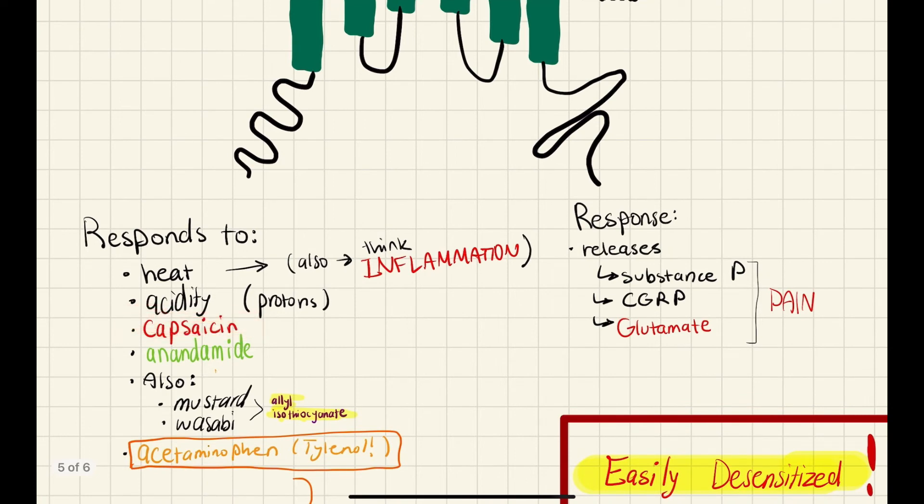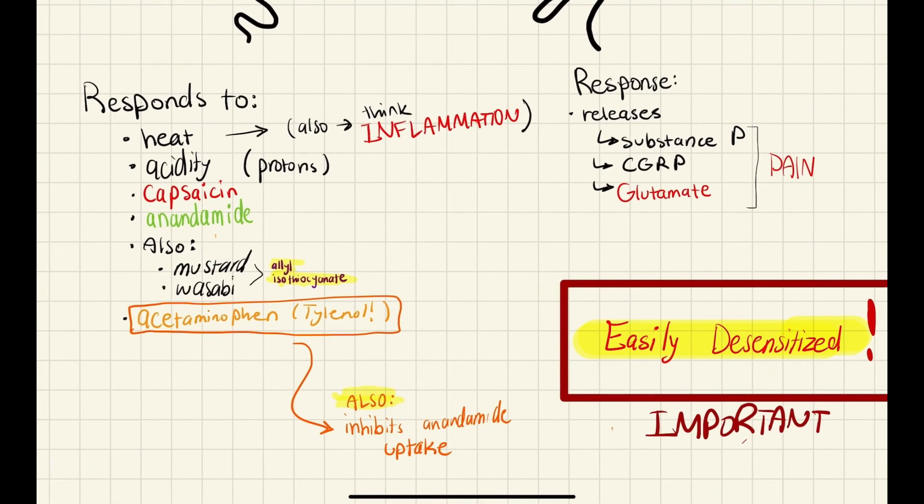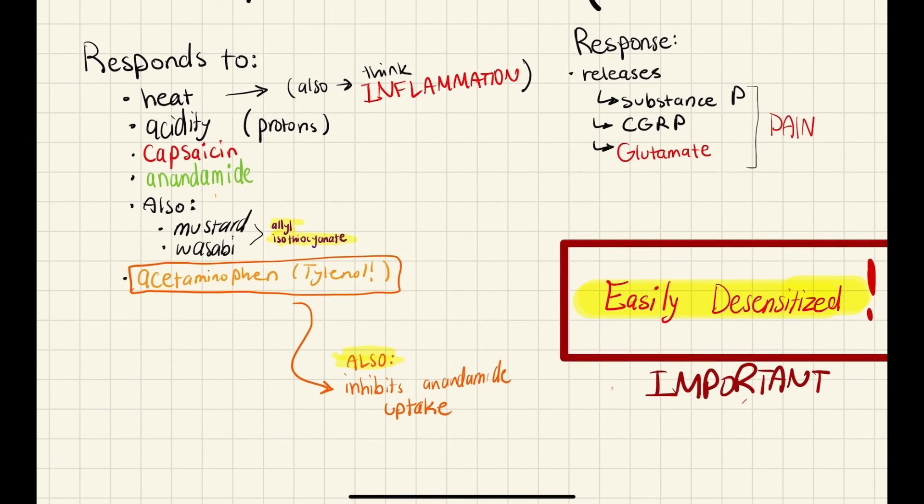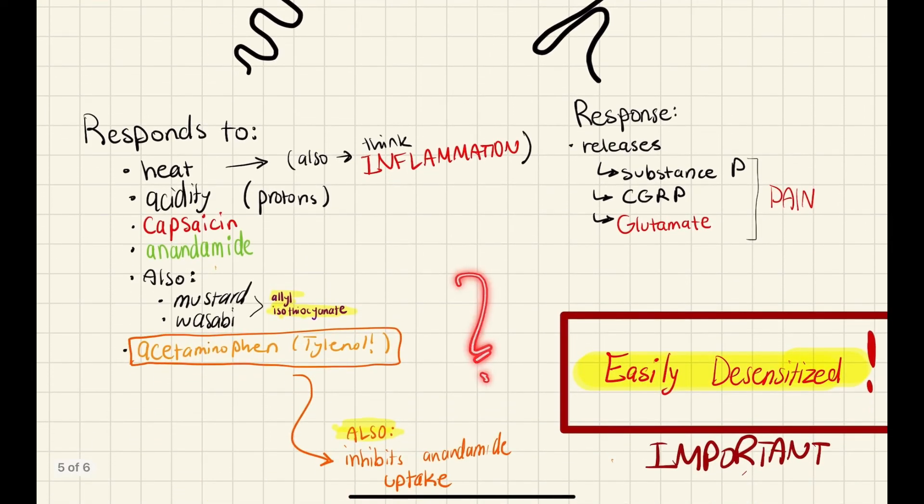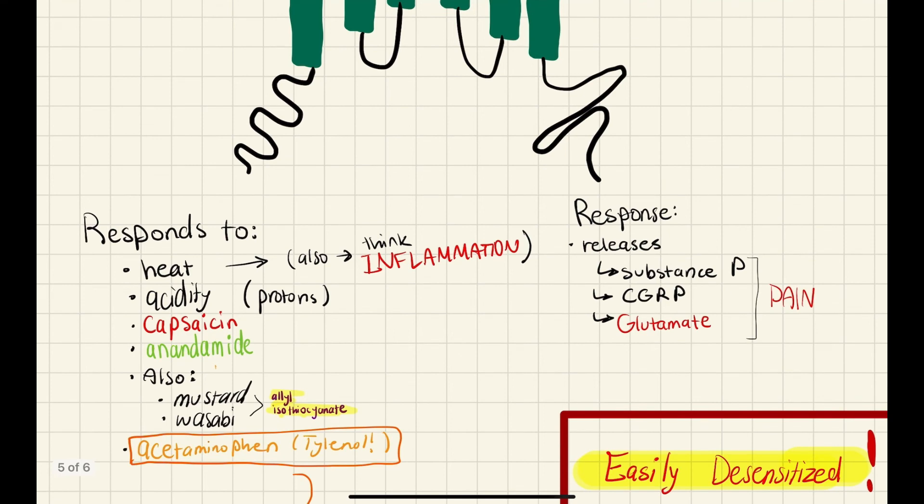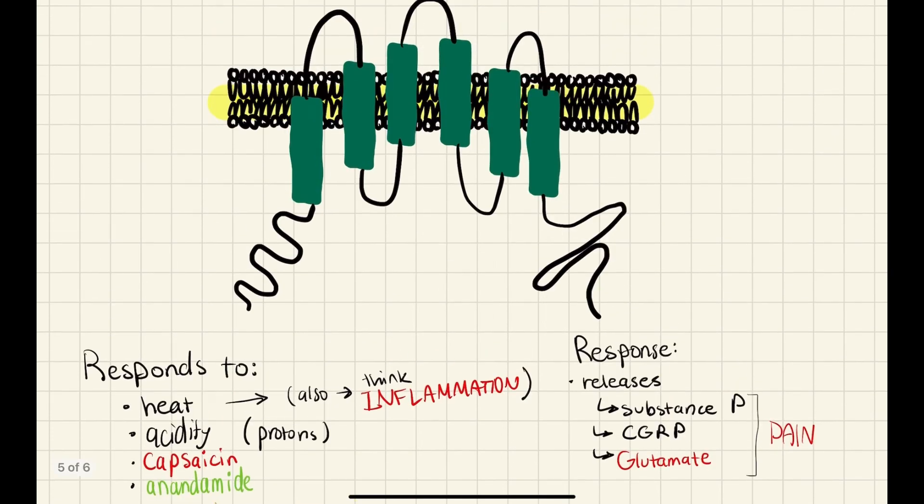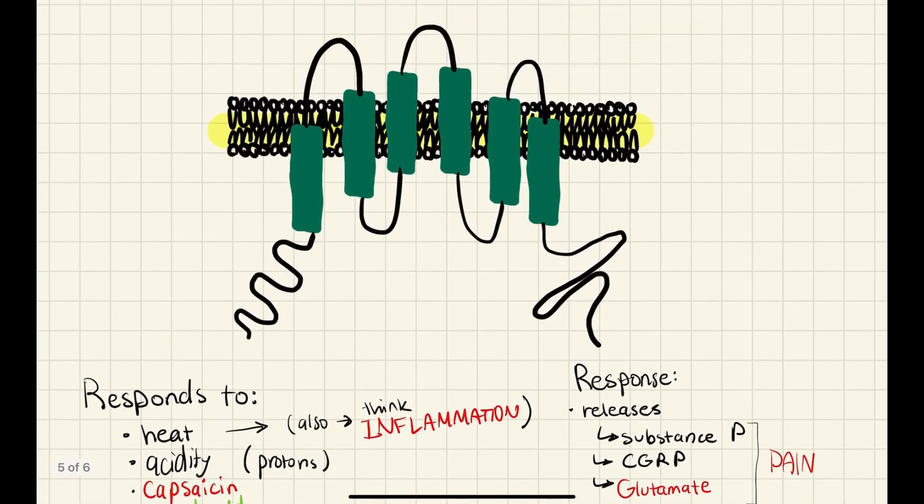But you also have drugs like capsaicin, which is found in hot peppers, and that's also an agonist to these receptors. You also have some other things that I'll mention, which is mustard and wasabi that contain a compound called allyl isothiocyanate. I'm not even going to try to say that ever again. But these also have a similar response. And lastly, you have acetaminophen, which is an active compound in Tylenol. And you might be wondering, wait, a drug that we take for reducing pain actually activates a pain receptor? How does that work? Well, it's actually because TRP-V1 receptors are easily desensitized. So when you have too much of these agonists, the receptor quickly desensitizes itself to these chemicals or its activation, and this causes relief for a certain period of time. And these drugs take advantage of that mechanism to cause pain relief.